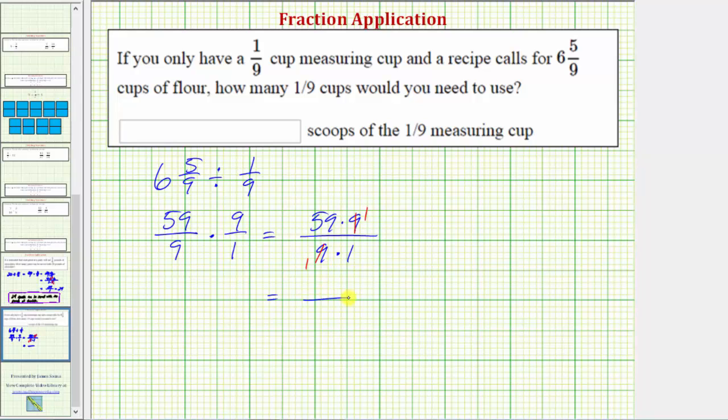And when we multiply, notice how we get a numerator of fifty-nine and a denominator of one, which simplifies to fifty-nine.